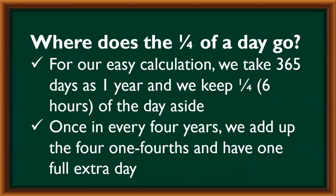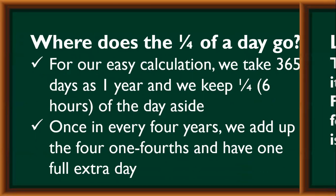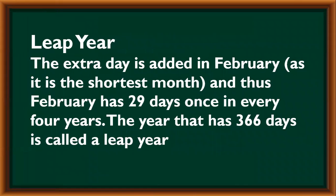Where does the 1/4 of a day go? For easy calculation, we take 365 days as one year and keep the 1/4, that is 6 hours, aside. Once in every 4 years, we add up the four 1/4s and have one full extra day. Leap year: the extra day is added in February as it is the shortest month, and thus February has 29 days once in every 4 years. The year that has 366 days is called a leap year.